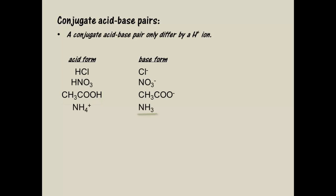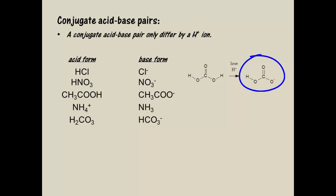In this pair, ammonia is the conjugate base of the ammonium ion. Carbonic acid loses one proton to form its conjugate base, which is the hydrogen carbonate or bicarbonate ion. And you may notice that the bicarbonate ion still has one proton left, so it can act as an acid too and form its conjugate base, which is the carbonate ion.